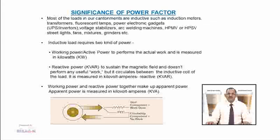Inductive loads require two kinds of power. First is working power or active power, which performs the actual work and is measured in kW. Second is reactive power in kVAR, which sustains the magnetic field and does not perform any useful work but circulates between the inductive coil of the load. Working power and reactive power together make up apparent power, measured in kVA.